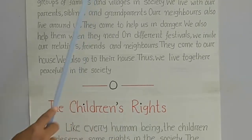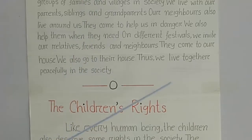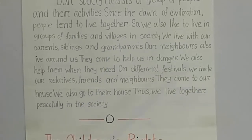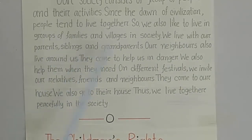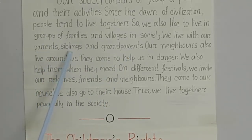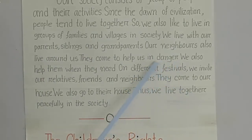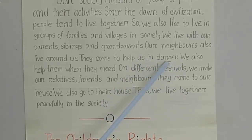Students, in this short note, you know we live in a society, in a family and a village. There we find our parents, siblings and grandparents. Parents means father and mother. Siblings means your brother, sister and cousin. Our neighbors also live around us — with all of them we make our society. We help each other in times of danger. When someone needs help, we help them, and we also help others when we need help.